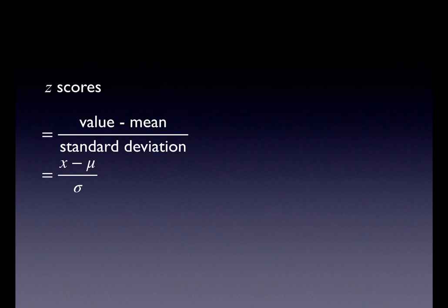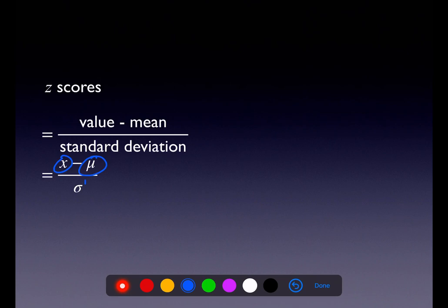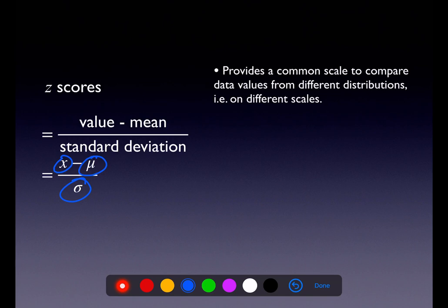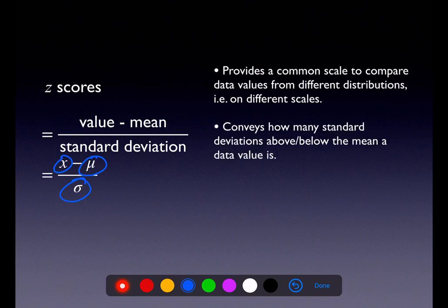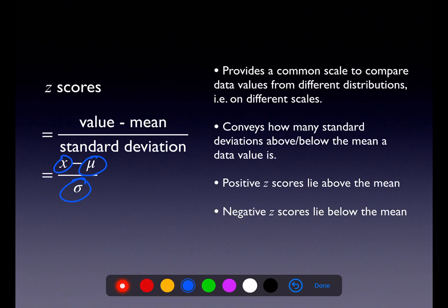Let's review z-scores. We introduced them in chapter 2 and they come back in chapter 6. The formula is: z = (value − mean) / standard deviation, or (X − μ) / σ. It takes data sets on different scales and puts them on a common scale so we can compare values. It tells you how many standard deviations above or below the mean any data value is. A z-score of 2 means two deviations above the mean; z = −3 means three deviations below; z = 0 means you're on the mean. Positive z-scores are above the mean; negative are below.